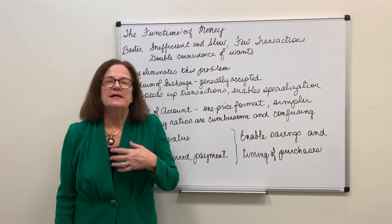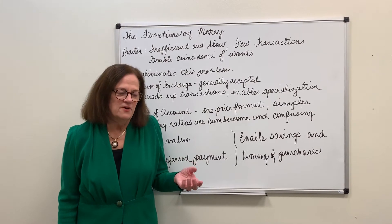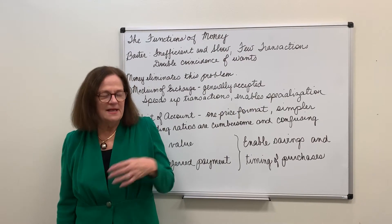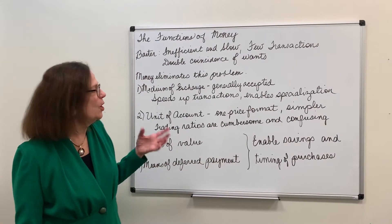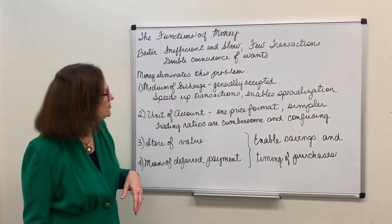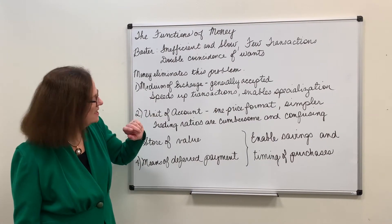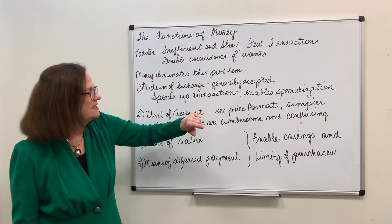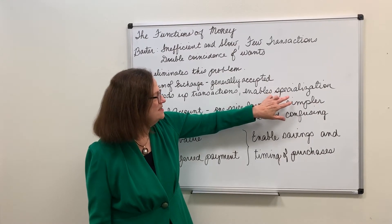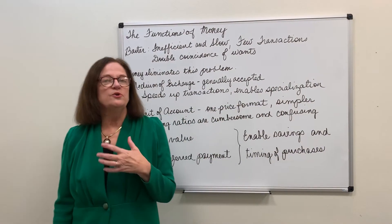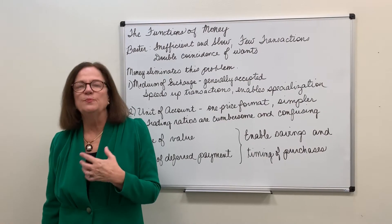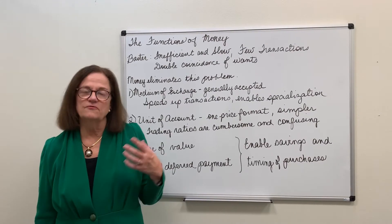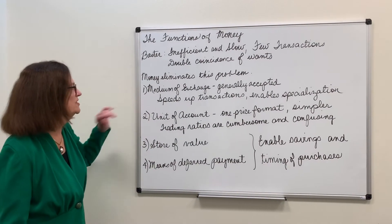If I have green beans, I simply exchange them with someone who wants green beans and they give me money. I take the money and go shopping for whatever I want — it's much easier than shopping with green beans. Because money is generally accepted and speeds up transactions, it enables societies to develop the specialization of labor, where you specialize in what you do best, get paid money for it, and use the money to buy things that are difficult for you to produce. That's the primary function of money.